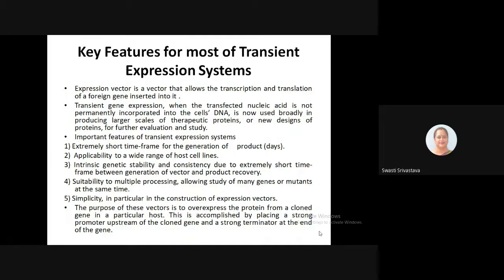We have two systems: the transient expression system and the stable expression system. For transient expression, the system should allow transcription as well as translation of a foreign gene in the host. The transfected nucleic acid is not permanently incorporated into the cell's DNA, and it is the most widely used method for large-scale production of therapeutic proteins and for designing, studying, and evaluating new proteins for their biochemical or biomedical aspects.